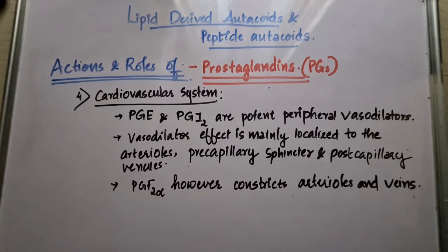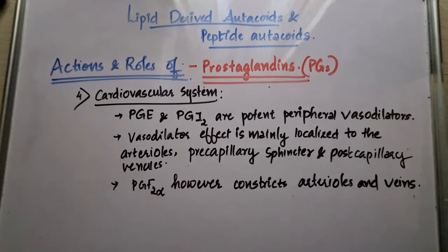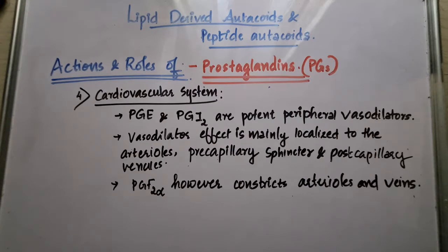Detailed cardiovascular actions: prostaglandin E and prostaglandin I2 are very potent peripheral vasodilators — PGI2 being almost five times more potent. The vasodilator effect of prostaglandins is mainly localized to arterioles, pre-capillary sphincters, and post-capillary venules. In contrast, PGF2 alpha constricts arterioles and veins. So vasodilators are PGE and PGI2, whereas PGF2 alpha causes vasoconstriction.